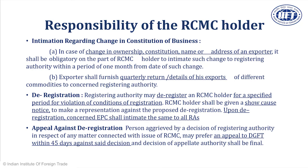Once you have obtained an RCMC, what is your responsibility? You are always to inform the government of the changes that take place in your RCMC. You have to file quarterly returns with details of your exports. If you fail to do all this, the EPCs have the power to deregister you, but they will first give you a show cause notice and you must reply to it. If they deregister you and you are aggrieved, you can appeal to the Department of Commerce or DGFT, pleading for revocation of that deregistration.